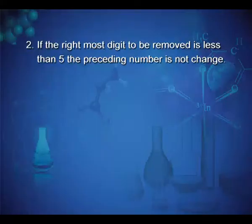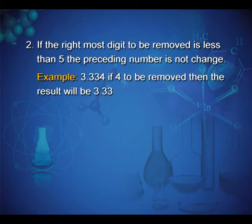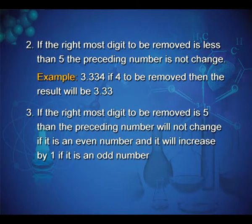Second point: if the rightmost digit to be removed is less than 5, the preceding number is not changed. Example: 3.334, if 4 is to be removed, then the result will be 3.33.